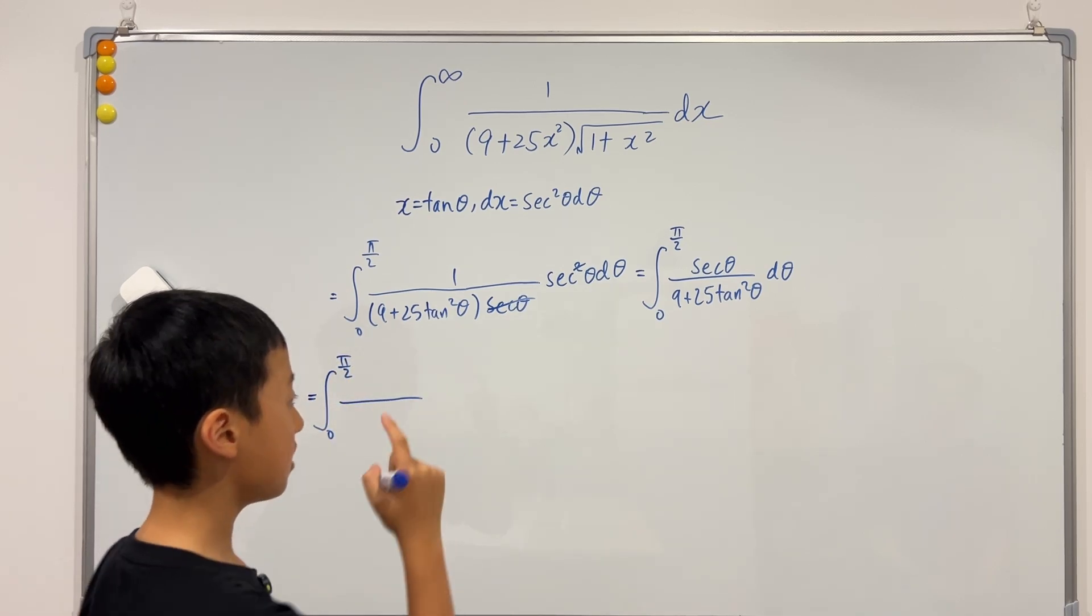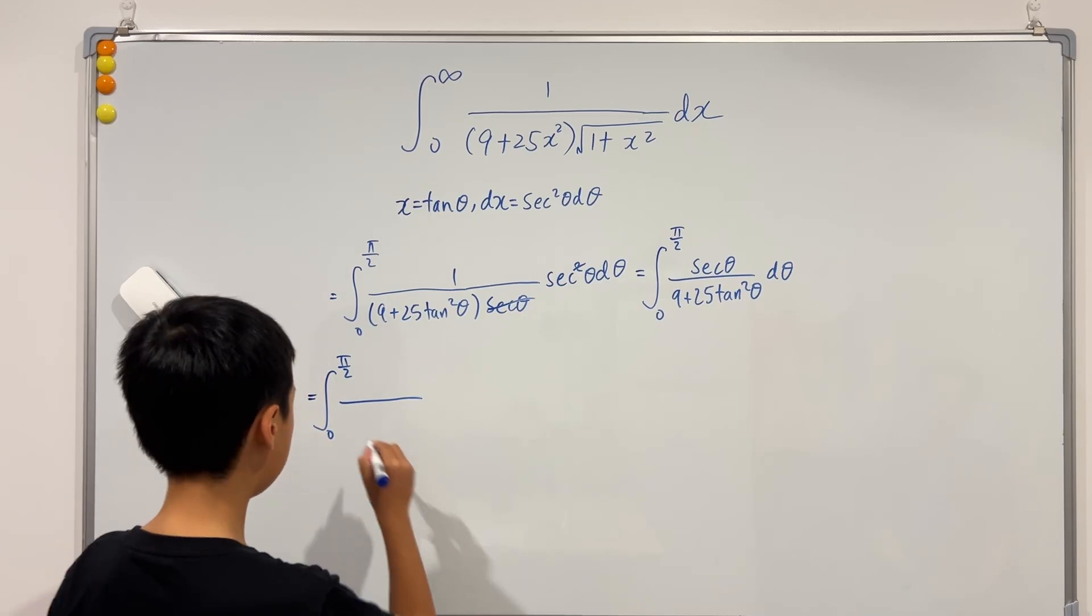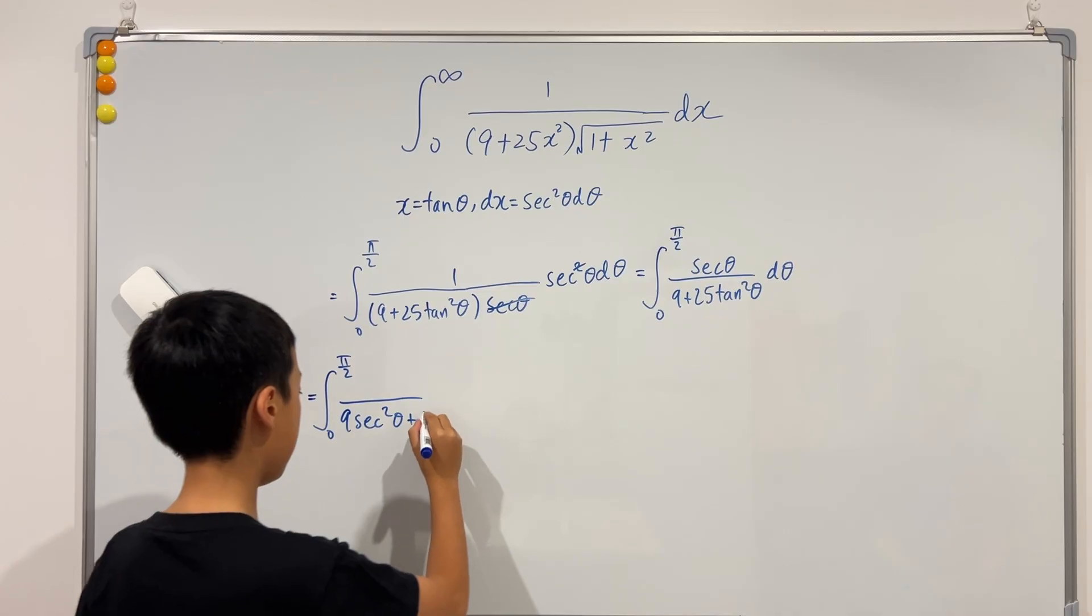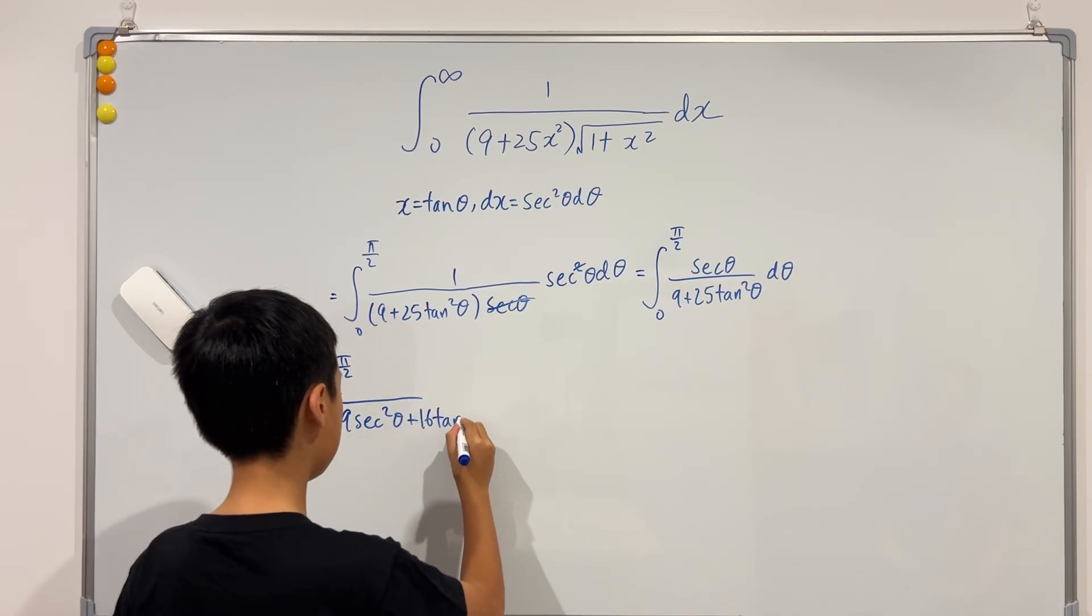Like I said, 9 plus 9 tangent squared is just 9 sec squared and we add 16 tangent squared.